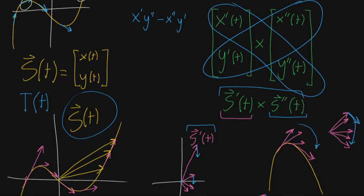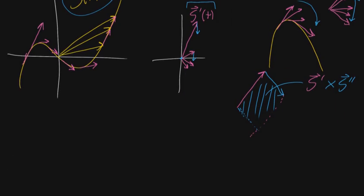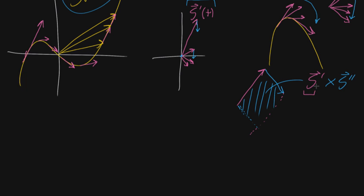But this is a problem if you think back to the cross product that we're now looking at, where you're taking the cross product between the first derivative and the second derivative, because if you were traveling along this curve twice as quickly, what that would mean is your first derivative vector would be twice as long, to indicate that you're going twice as fast. And similarly, your second derivative vector, to kind of keep up with that changing rate, would also be twice as long.